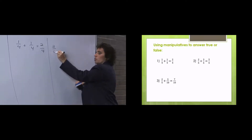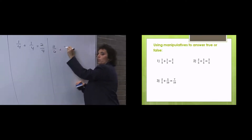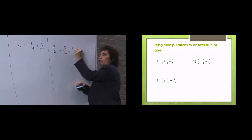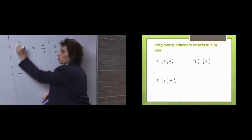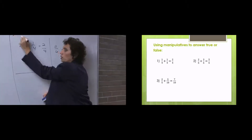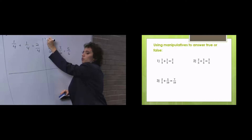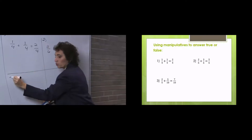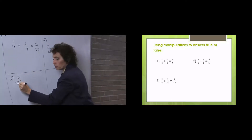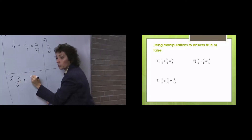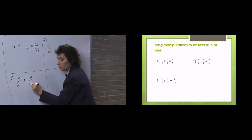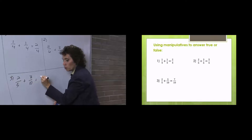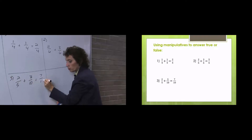Two sixths plus three sixths equals five sixths. And the next one — number one, number two — let's put number three up. Number three says two fifths plus three tenths equals seven tenths.